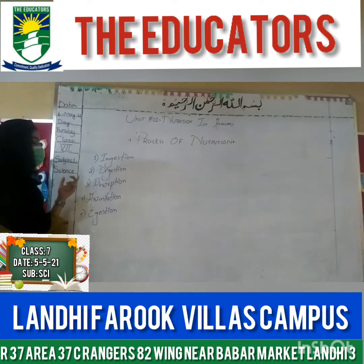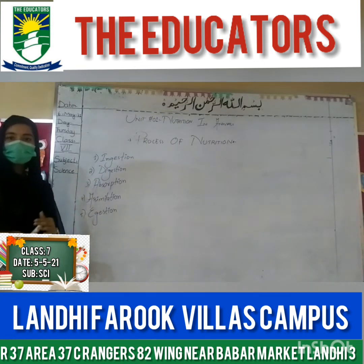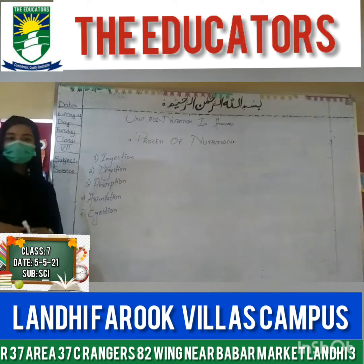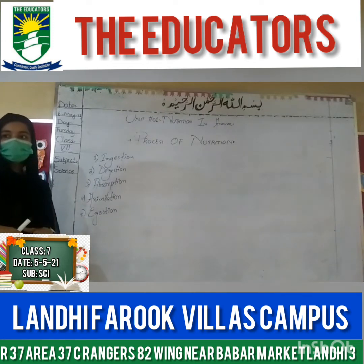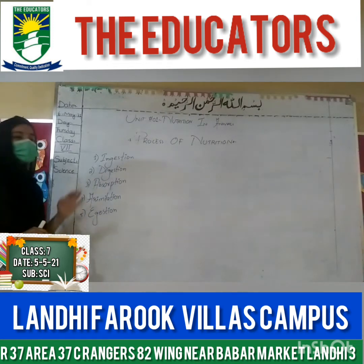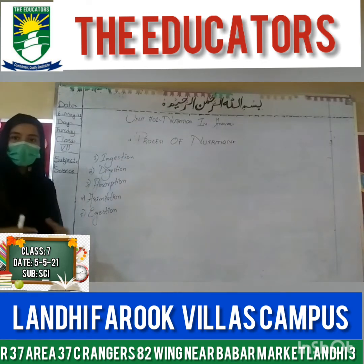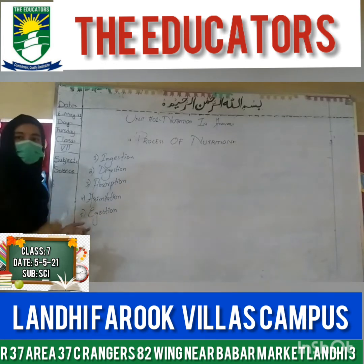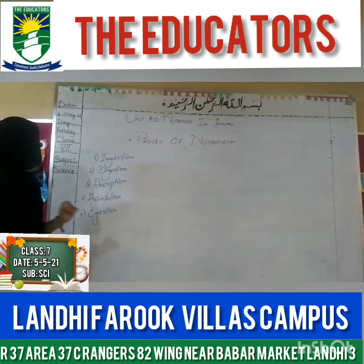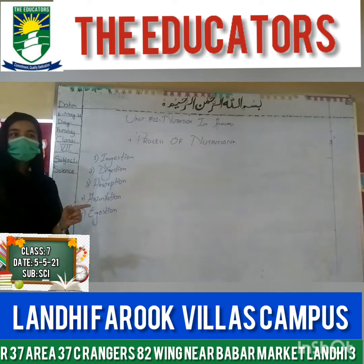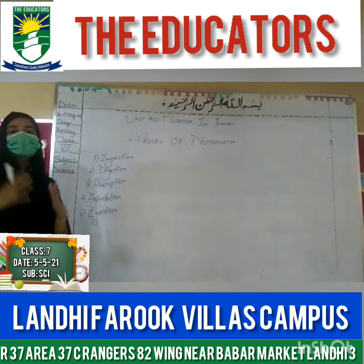Step number three is absorption. Absorption is the process in which the simpler form of food is absorbed by the cells of the body and transferred to other body parts for functioning. Step number four is assimilation, which is the process of absorption of vitamins and minerals obtained from food — these vitamins and minerals are absorbed by the body.